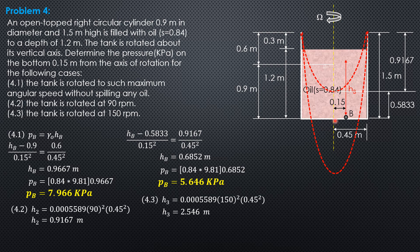Let's compute for that radius of the exposed bottom by computing this distance first because the total height is 2.546 minus 1.5. So that means this is 1.046 meter.